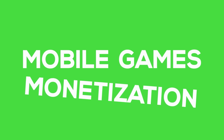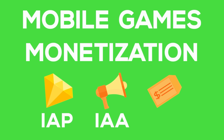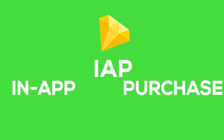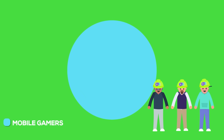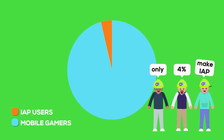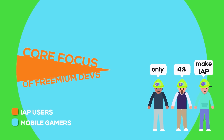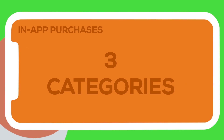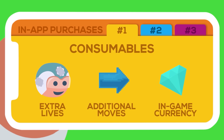Now let's talk about mobile games monetization in detail. There are three models that have been the most popular: IAP, IAA, and paid apps. In-app purchases, or IAP, is the monetization model of choice for a huge portion of mobile game developers. Only 4% of gamers actually make in-app purchases, but those paying customers are the core focus of freemium developers. IAP typically includes three different categories of purchasable items. First, consumables — these are purchases that are made, then consumed within the app, such as extra lives, additional moves, or in-game currency.